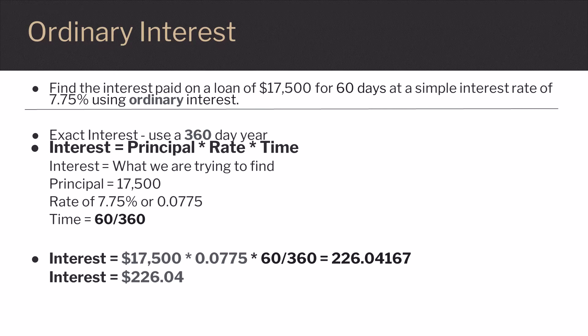You use the same formula: Interest equals Principal times Rate times Time. We plug in the same values for principal and rate. For time, we have 60 days, which we divide by 360, since this is ordinary interest. Our calculation is 17,500 times 0.0775 times 60 divided by 360, which gives 226.04167. Rounded to the nearest cent, our interest would be $226.04.